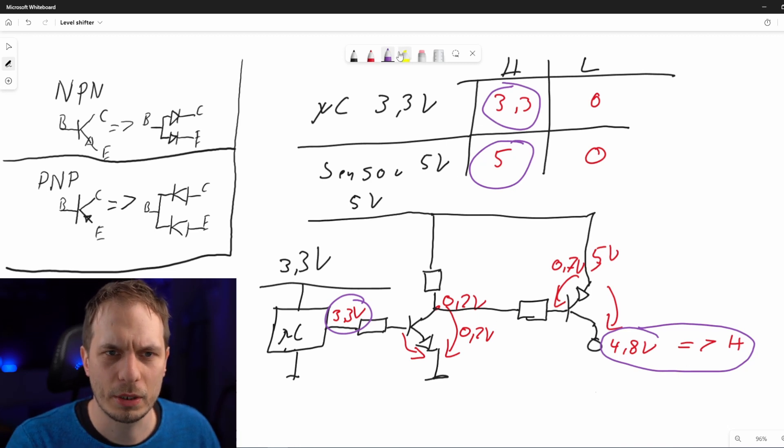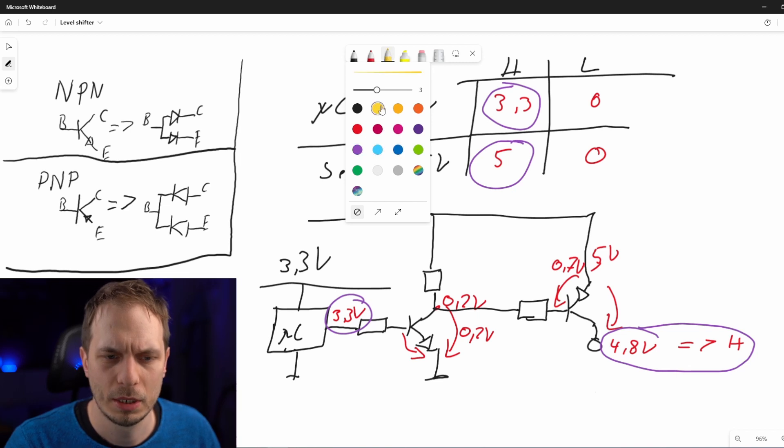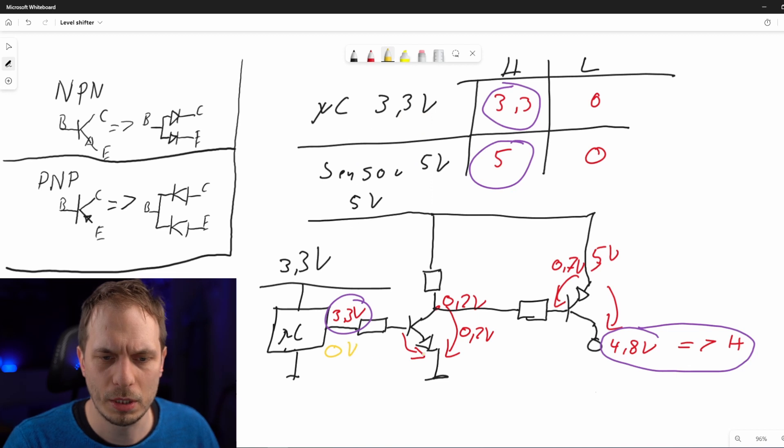Now let's check on the other side what is happening if I have a low signal. I'm coming with 0 volts. This gives me no drop over the diode, so I'm here at 5 volts.